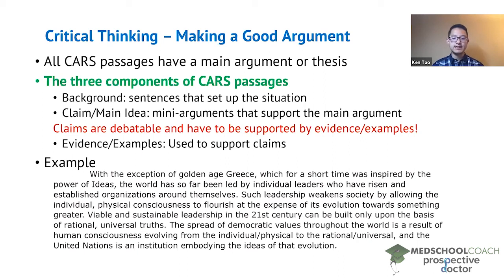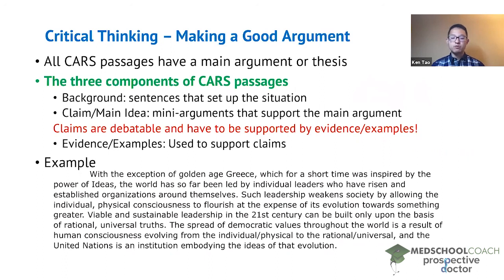Finally, the last sentence: 'The spread of democratic values throughout the world is a result of human consciousness evolving from the individual physical to the rational universal, and the United Nations is an institution embodying the ideas of that evolution.' This last sentence is an example — the author was making a claim about what society needs to succeed and evolve, and this sentence provides an example of that with the United Nations. So here you can see an example with claim, background, and evidence — something you want to keep in mind as you're reading through a CARS passage.